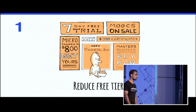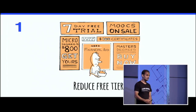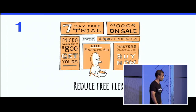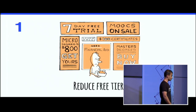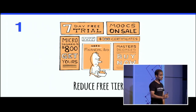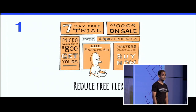The first step is reducing the free tier. Originally in MOOCs, everything was free: the course videos, assignments, and even the certificate. But to monetize MOOCs, they had to reduce the free tier. The policy might vary from provider to provider, but all the major MOOC providers have taken back what was originally free.